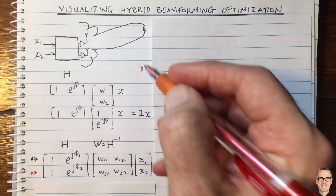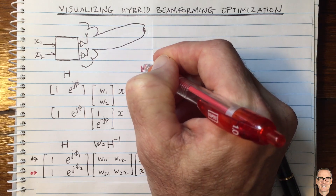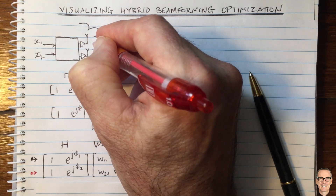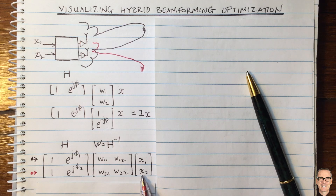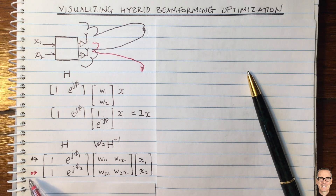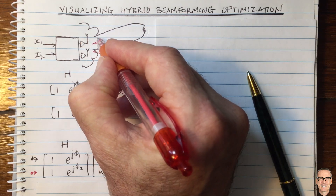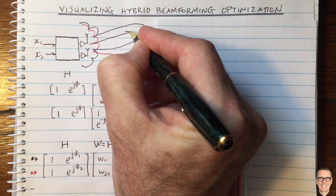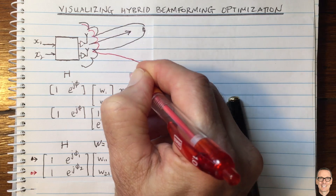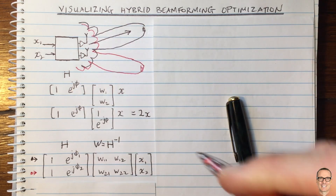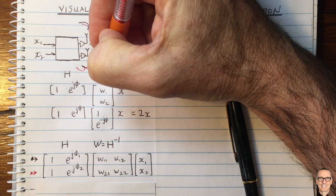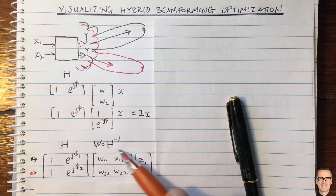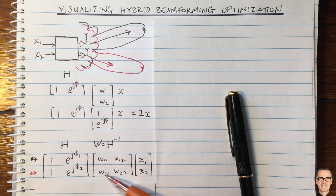At other directions you're going to get different gains. By doing it this way, none of X2 is coming in the black direction, and none of X1 is coming in the red direction. We've managed to form a beam with a null in the direction of the black user, and likewise the black beam has a null in the direction of the red user. We can make this choice if we have total freedom over the W matrix.